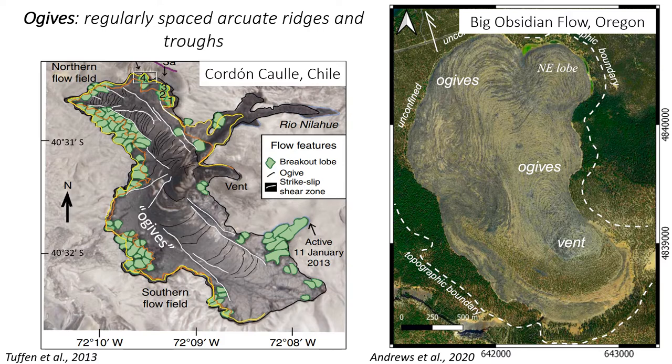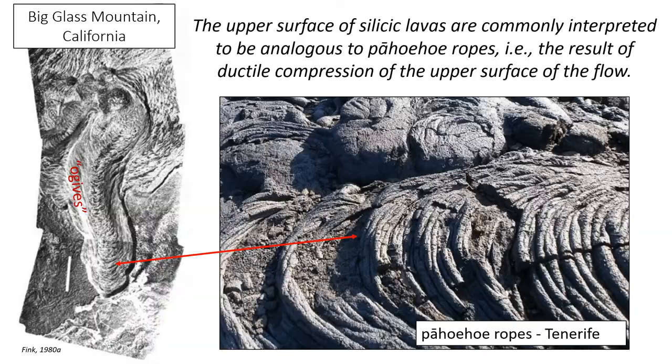The upper surface of silicic lavas are characterized by regularly spaced arcuate ridges and troughs, or ogives. The figure to the left shows an aerial image of the then-active Cordón Caulle lava in Chile. The authors identified ogives marked here as thin black lines occurring to the north and to the south of the vent. On the right, we have an aerial image of Big Obsidian Flow in Oregon, where authors also identified ogives to the north of the vent based on the arcuate shapes and color differences seen on the surface.